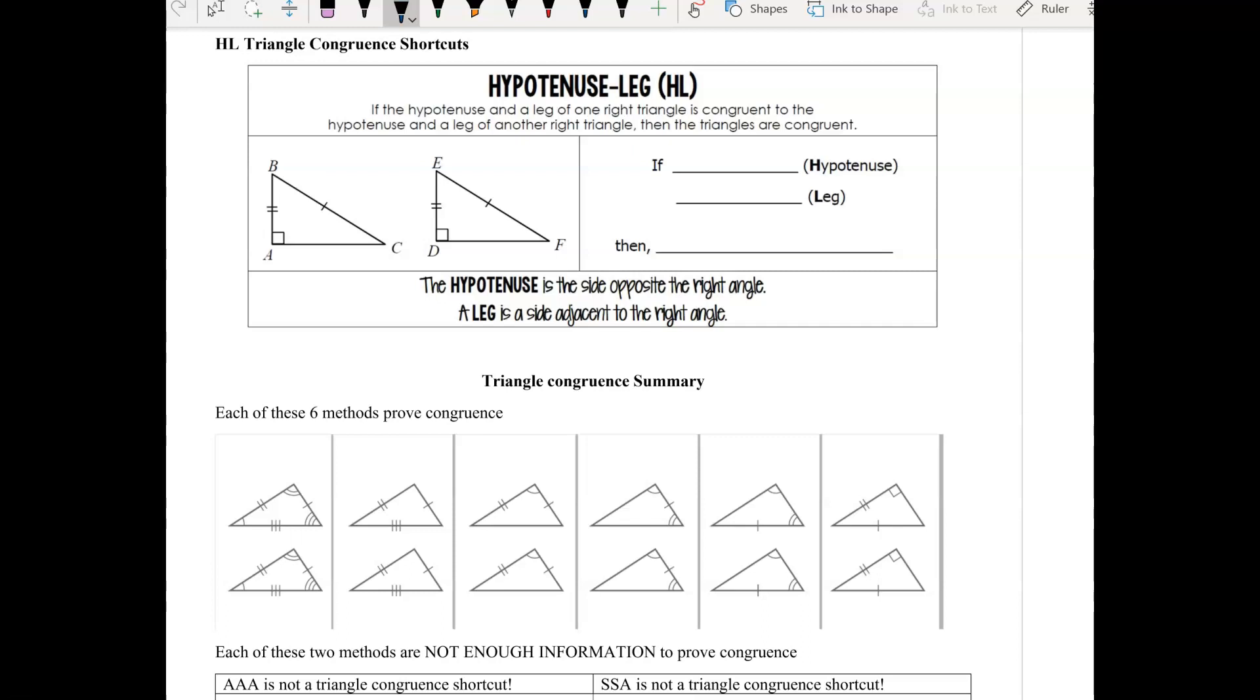Hello and welcome to a video on the last triangle congruent shortcut, which is called hypotenuse leg. This is a special case of what we will see in a minute is not always a good shortcut, but this one in this special case is kind of like side-side angle, but when the angle is a right angle and those sides have the special names.